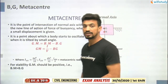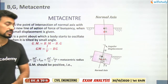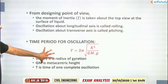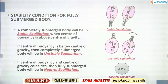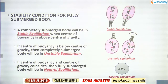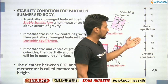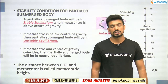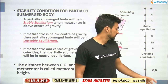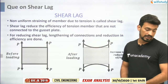Meta center related questions on buoyancy and center of gravity were discussed yesterday; another related question appeared today. Remember stability conditions: for fully submerged body, B above G means stable. For partially submerged, M-G-B sequence is stable; G-M-B is unstable; and for neutral, G and B coincide.